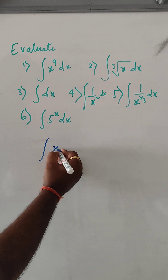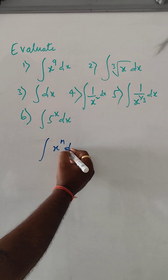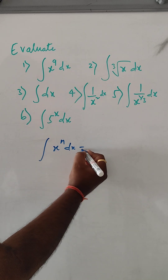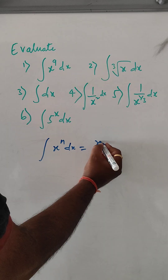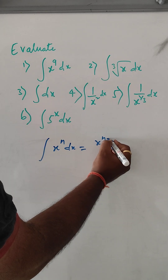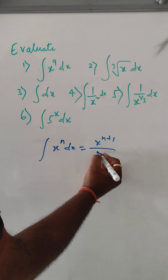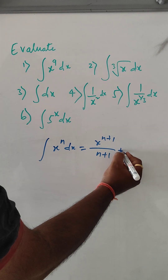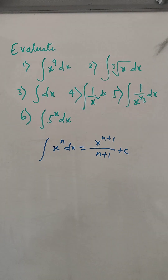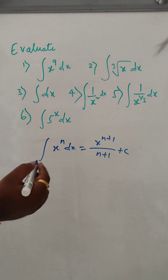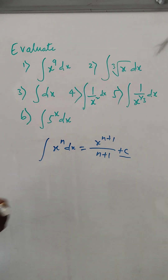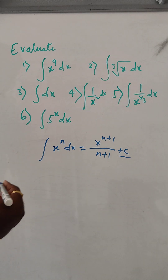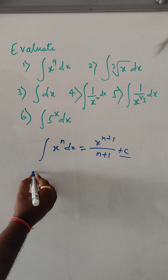The integral of x to the power n dx. What will be the answer for this? It is x to the power n plus 1, divided by n plus 1, plus c. For an indefinite integral, plus c must be added. So, first one we will solve.